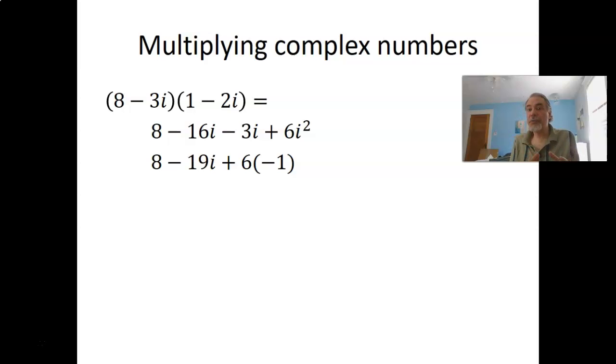So we don't want to leave that i squared in the answer. We want our answer to be in standard form with just a real part plus an imaginary part times i, and nothing more after that. So to do that, we turn the i squared into negative 1, and then we got 8 minus 19i, and then the 6 times the negative 1 would be negative 6. And when we combine 8 and negative 6, we get 2. So multiplying together 8 minus 3i times 1 minus 2i gets us the complex number 2 minus 19i.